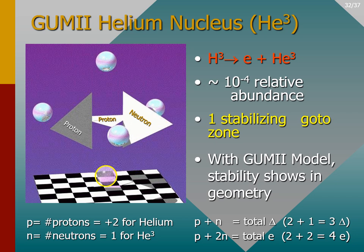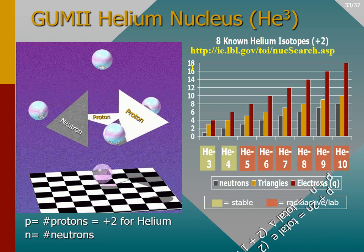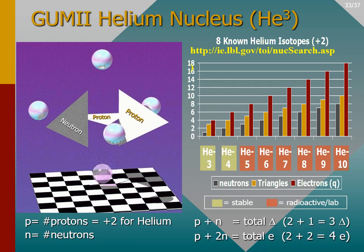To double-check our drawing, we can look up helium-3 and find that it has two protons and one neutron in the nucleus. Then using the GUMMI graphic rules, the model should and does contain three triangles and four GUMMI quark electrons. As shown in the helium isotope chart, there are eight known isotopes of helium and only two are stable. Helium-3 is shown on the left with its three triangles and four electrons. Helium-4 will be shown on the next slide.